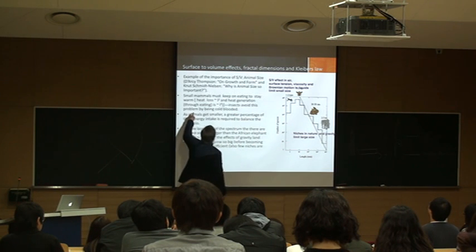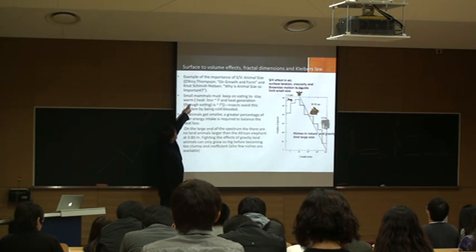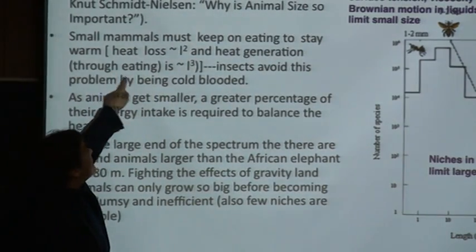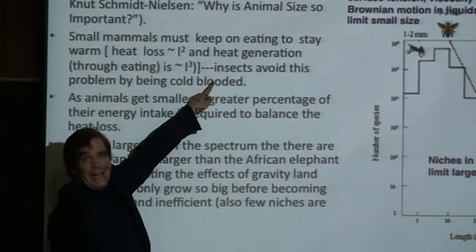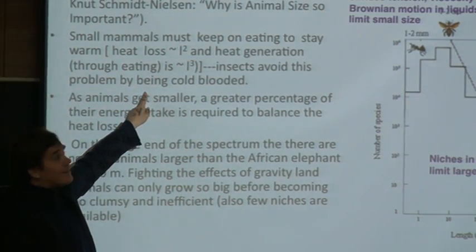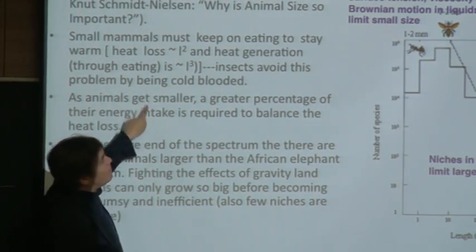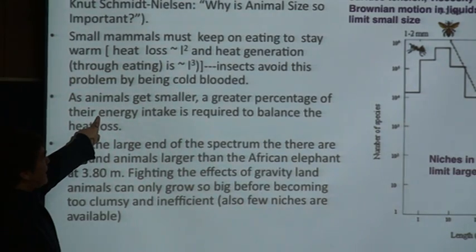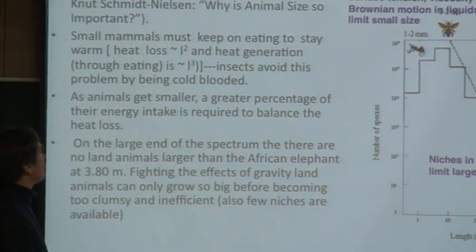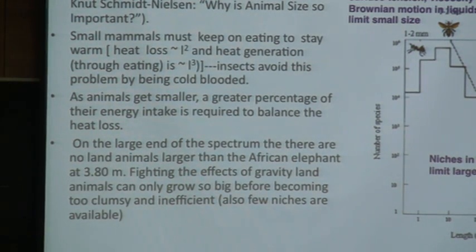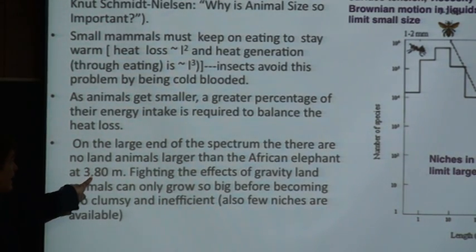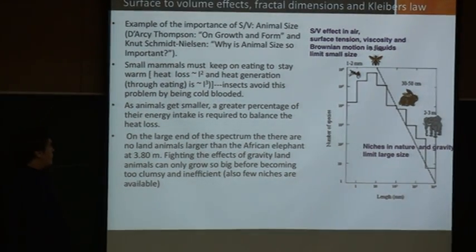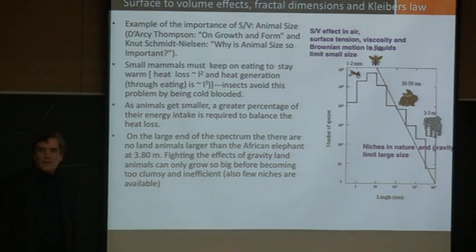This explains the point about the elephant versus the chipmunk. Small mammals must keep on eating to stay warm — heat loss goes as L-squared, while energy generation through eating goes as L-cubed. Insects avoid this fate by being cold-blooded, which is why we can have insects in such tremendous numbers despite being smaller than mammals. As animals get smaller, a greater percentage of their energy intake is required to balance heat loss. On the larger end, there are no land animals larger than the African elephant at three meters — fighting gravity, land animals can only grow so big before becoming too clumsy and inefficient.